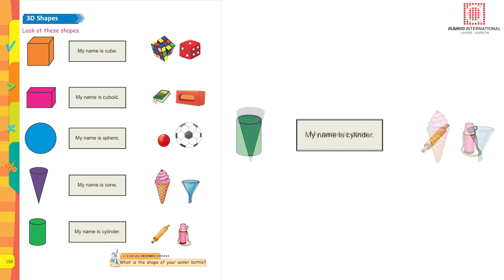Then the fifth shape is a cylinder. Yes, your water bottle is cylindrical in shape, and the rolling pin with which you make chapatis, yes, it is also cylindrical in shape.